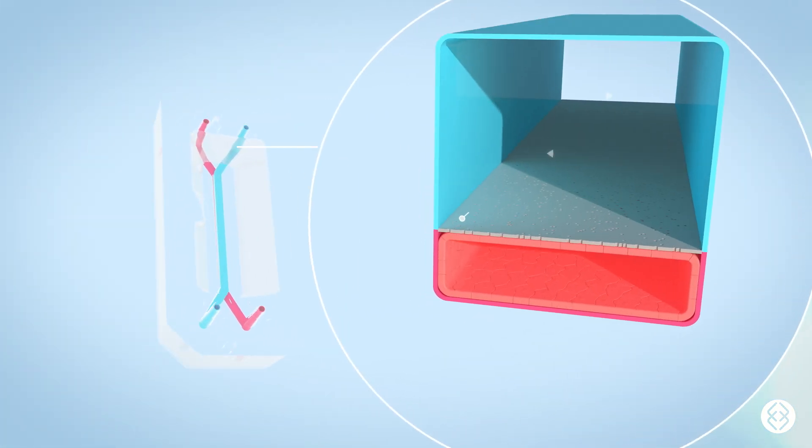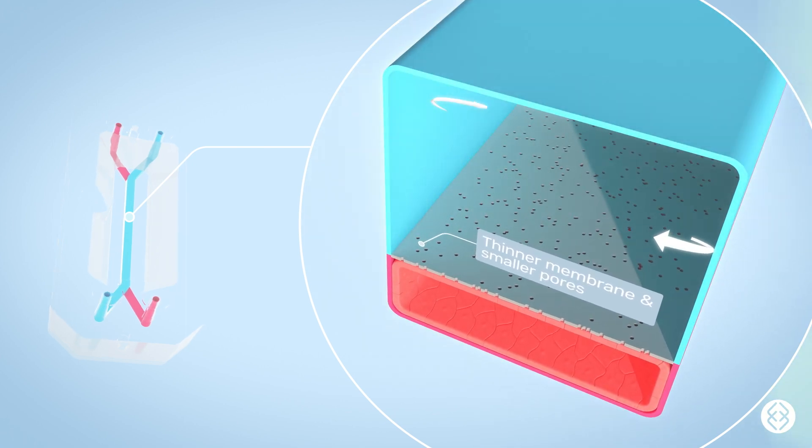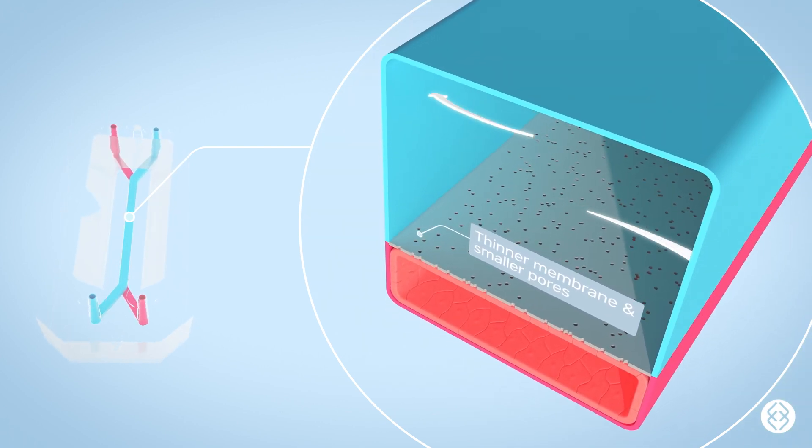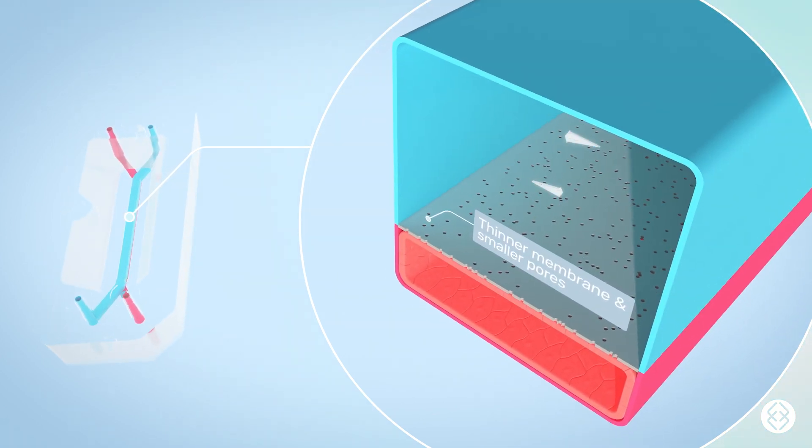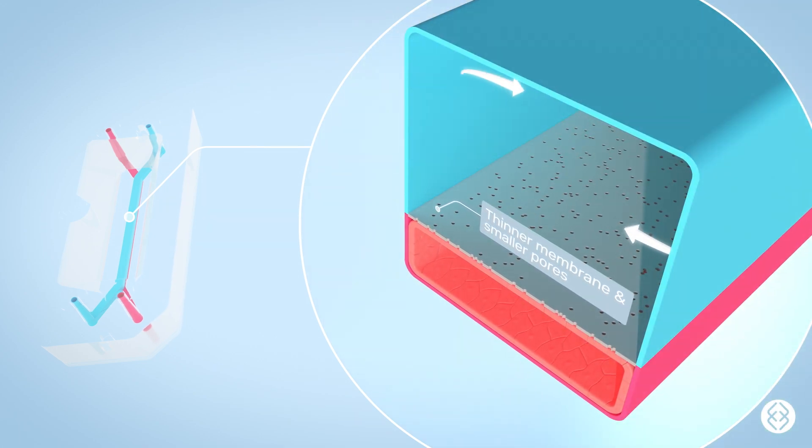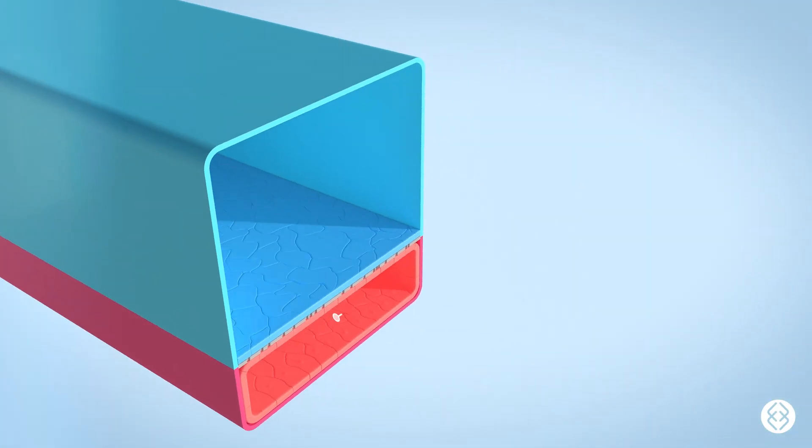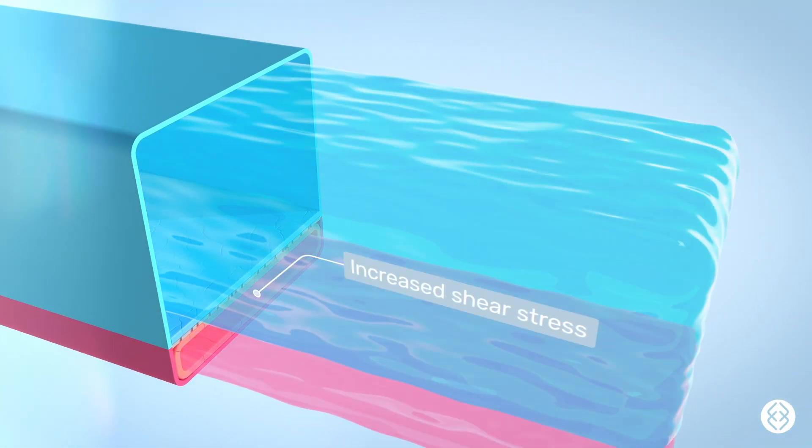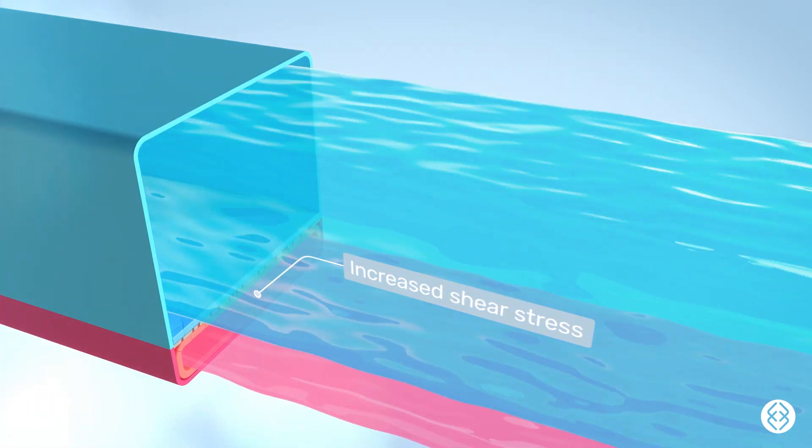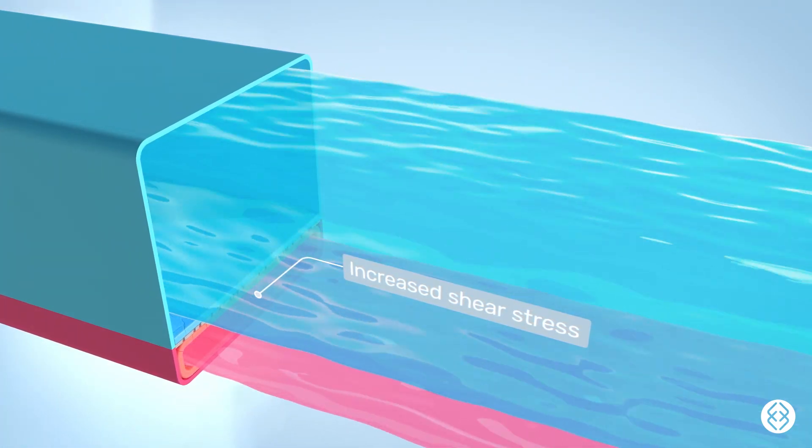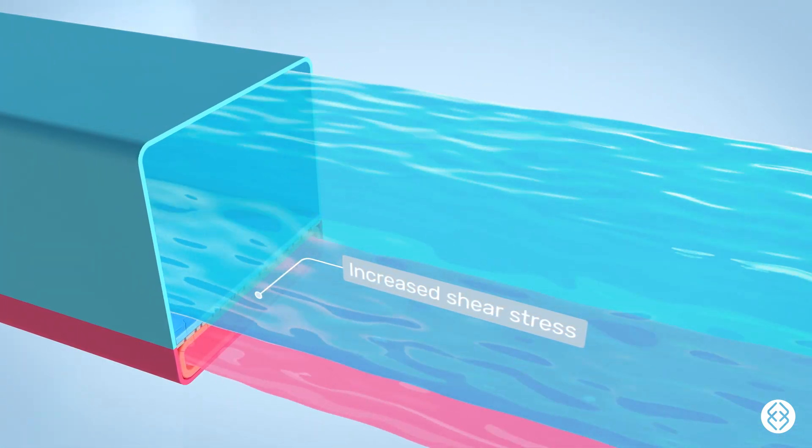The chip R1 rigid chip features the same structure as the chip S1 but consists of a non-absorbing rigid plastic, making it ideal for testing drugs without concern for PDMS absorption in organs that do not require stretch. Its shorter vascular channel results in increased shear stress, which is critical for modeling certain biological processes like circulating immune cell recruitment.